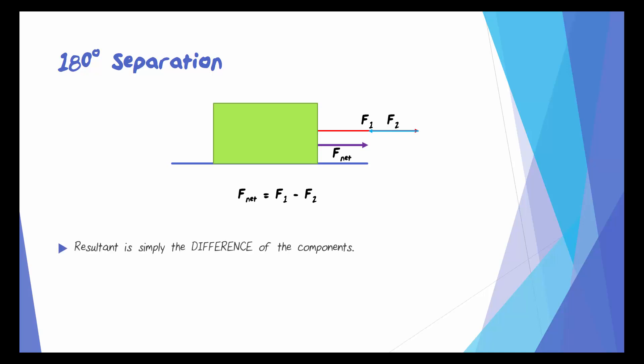The resultant is simply the difference of the components. And 180 degrees of separation gives us the minimum possible resultant. There's no other way we could combine these two vectors and end up with a smaller resultant.